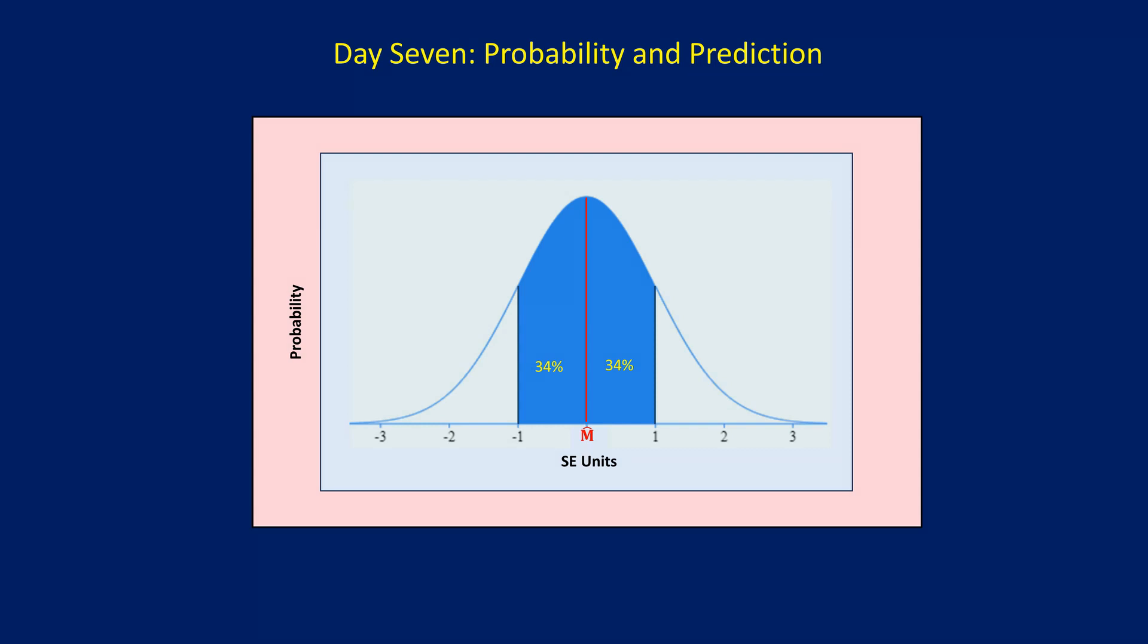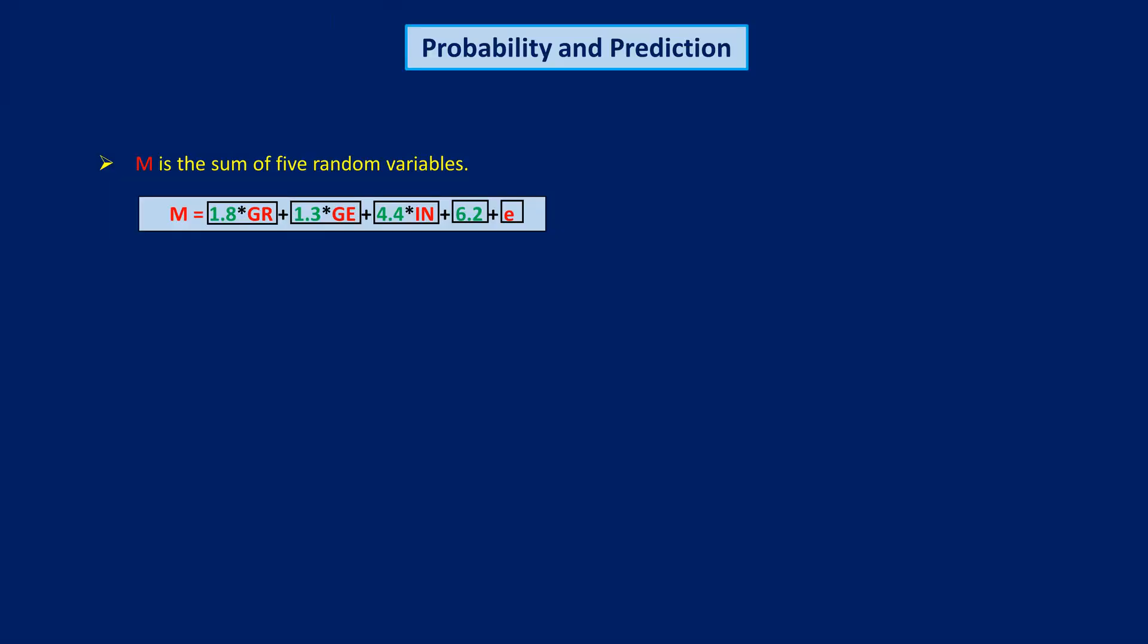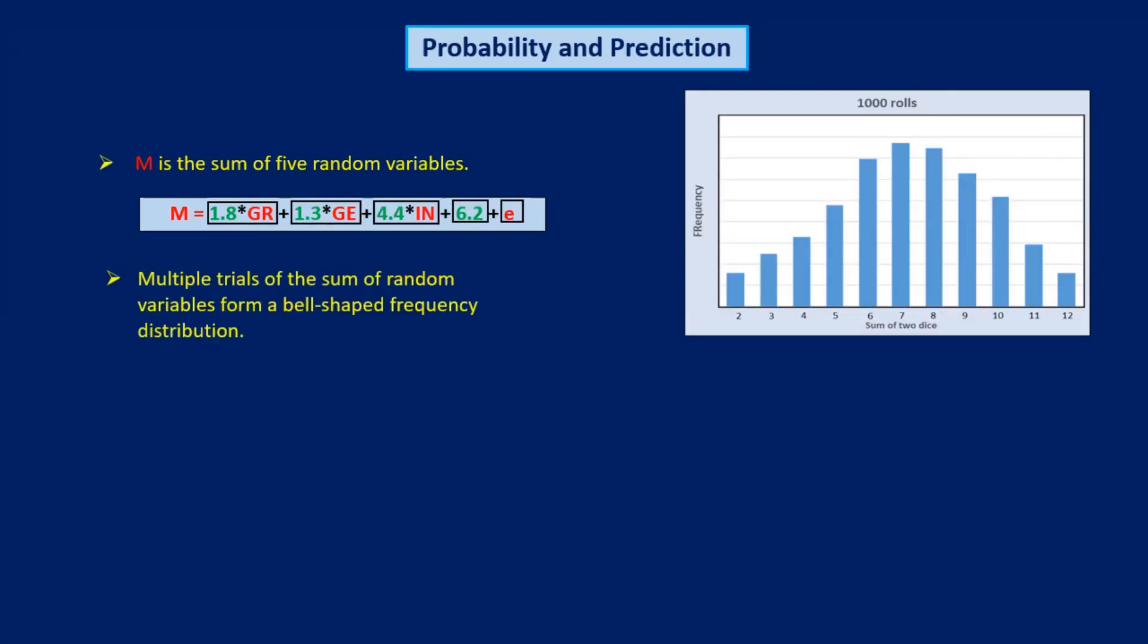I said that m is actually the sum of five random variables, those being the five terms of the regression equation. I then stated a fundamental rule of statistics. When a random variable is itself the sum of other random variables, the distribution of outcomes after multiple trials of that random variable will tend to be bell-shaped. This shape is characteristic of what we call a normal distribution.